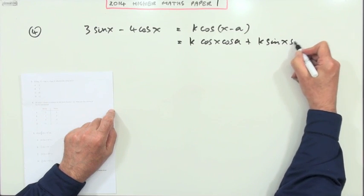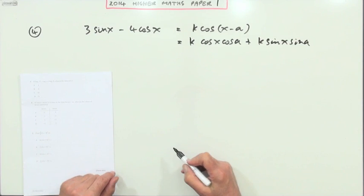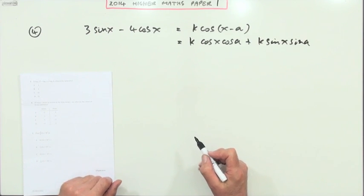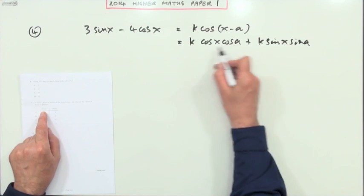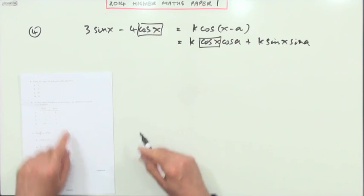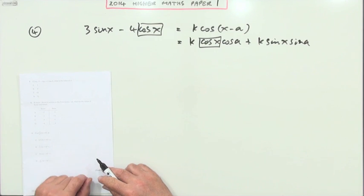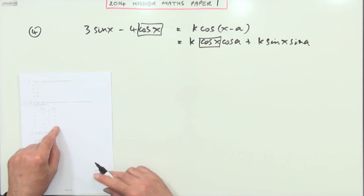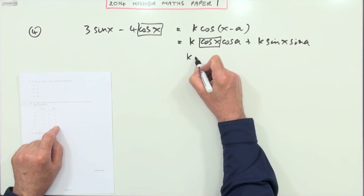So to compare them, you compare them term to term. If I wanted the k cos a, that's the coefficient of cos x. The coefficient of cos x is -4, so it must be D. That's the only one that's got -4. But just to double check with the next one.